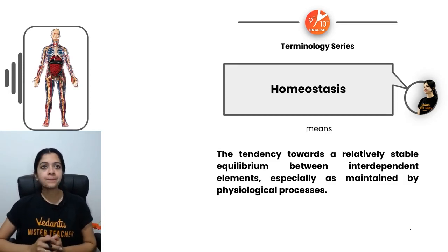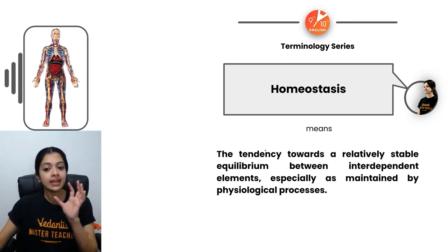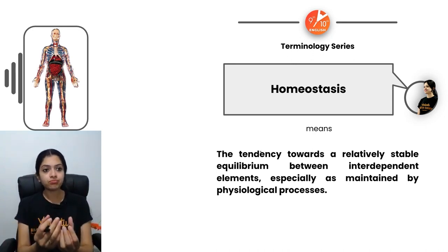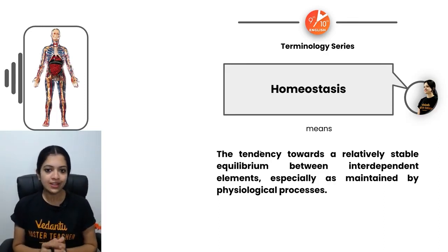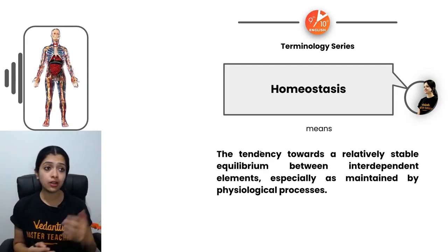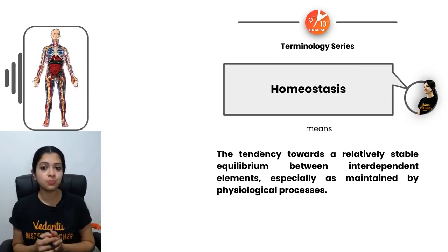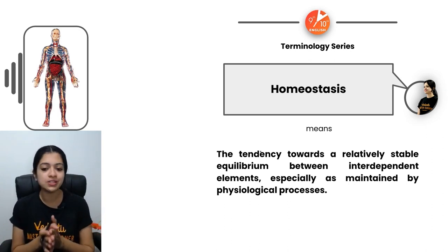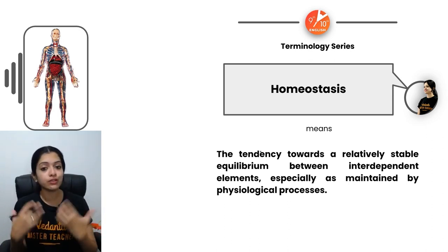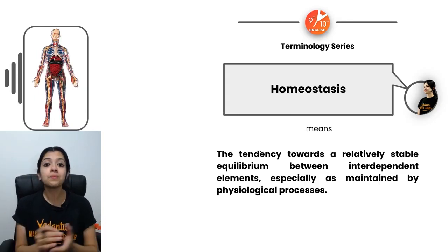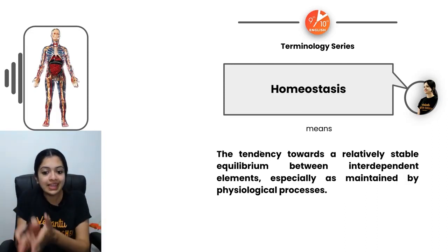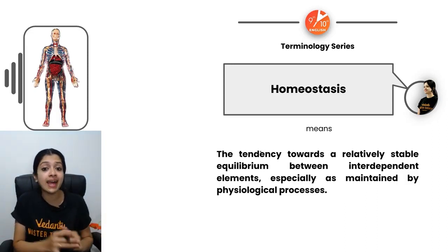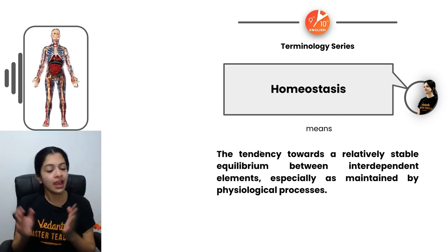Homeostasis is a term we quite often hear in biology. Simply put, homeostasis is the sum total of all the metabolic activities happening inside an organism — lots of building-up processes (anabolism) and breakdown processes (catabolism). Together, these maintain the tendency towards a relatively stable equilibrium between interdependent elements as maintained by physiological processes.